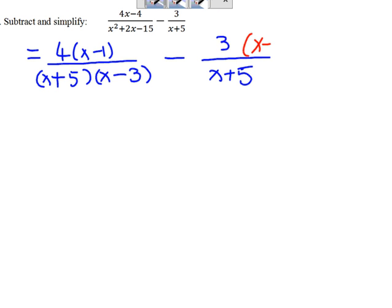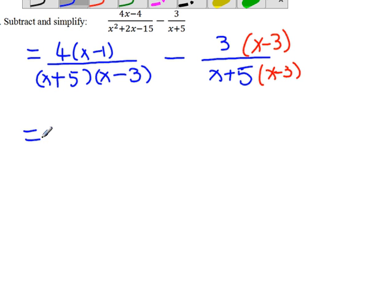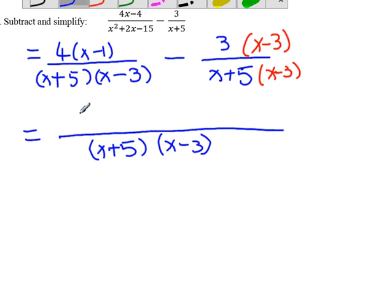x minus 3, so let's write it down on both numerator and denominator. Therefore, we get, now we have the same denominator. So all we have to do is keep the denominator as (x+5)(x-3), and subtract the numerator.